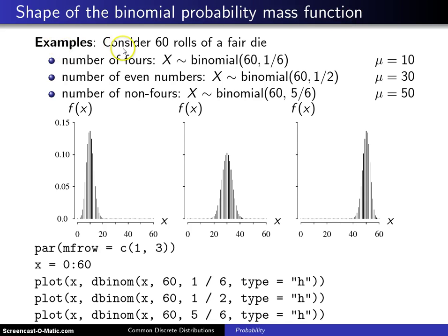Here's the experiment. Consider 60 rolls of a fair die. There are three different definitions here of a random variable X which is associated with this experiment.